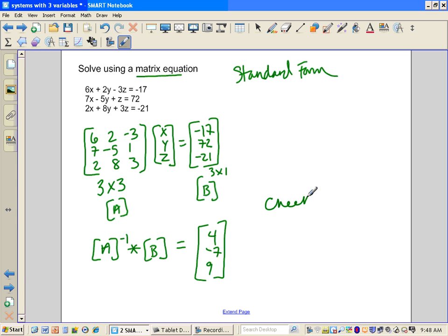And if you wanted to check this, we could plug it in to check, let's just use the top equation as 6 times 4 plus 2 times negative 7, subtract 3 times z is 9, is that equal to negative 17? Well that's 24, subtract 14, subtract 27. Well that's going to be, let's see, 24 minus 14 is 10, subtract 27 is negative 17, so that works.